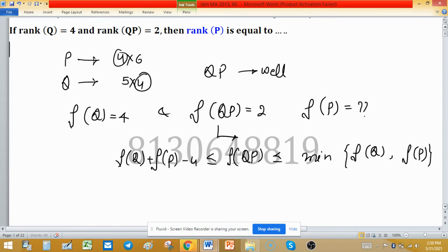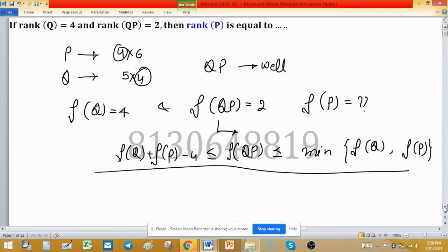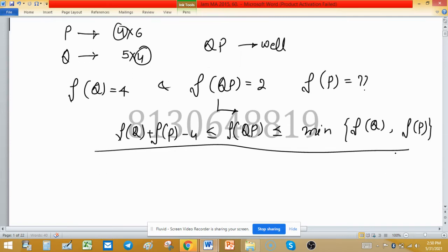Now we have this relation and we have to find the rank of P. Consider rank of Q is 4. As rank of Q is 4, we have minus 4 plus rank of P.